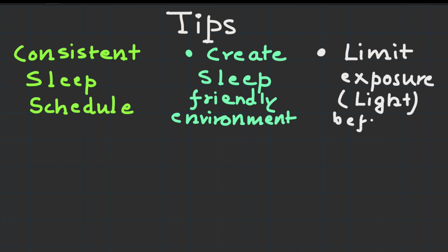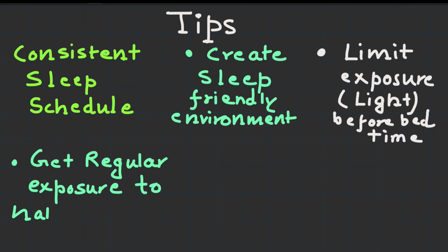Avoid screens and bright lights that can disrupt melatonin production. Get regular exposure to natural light. Spend time outdoor during the day to help regulate your biological clock.